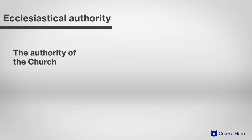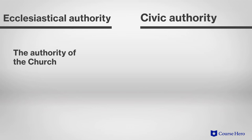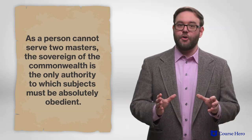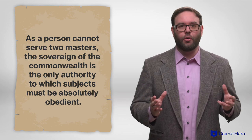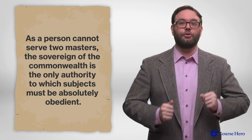Finally, ecclesiastical authority, the authority of the church, must, according to Hobbes, be subordinate to civic authority, the authority of a sovereign state, in order to prevent civil wars based on differing interpretations of religious writings. As a person cannot serve two masters, the sovereign of the commonwealth is the only authority to which subjects must be absolutely obedient.